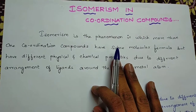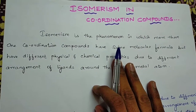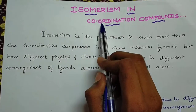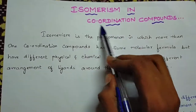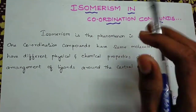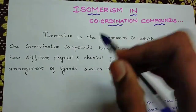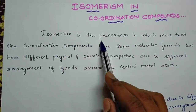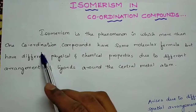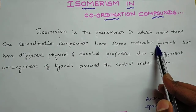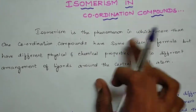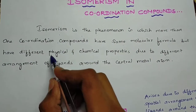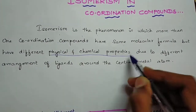Isomerism means compounds that have the same molecular formula but different structure and properties. This concept exists in organic chemistry as well. In coordination chemistry, isomerism is a phenomenon in which more than one coordination compound has the same molecular formula but different physical and chemical properties.